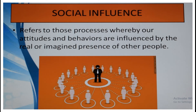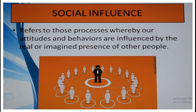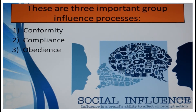For example, many children who watch WWE — their body language also changes, they start feeling like fighters, feeling their muscles strengthen while just sitting on the sofa. This is the part of social influence. There are three important group influence processes: conformity, compliance, and obedience.